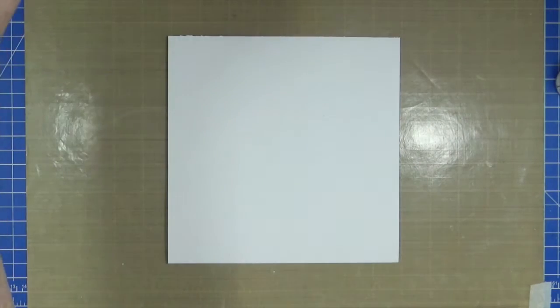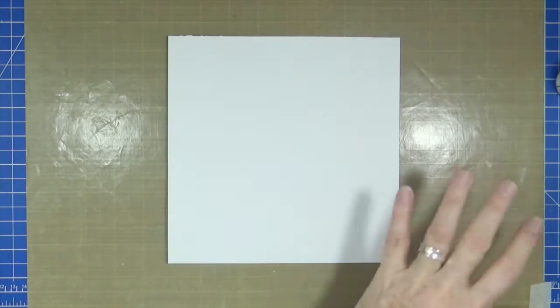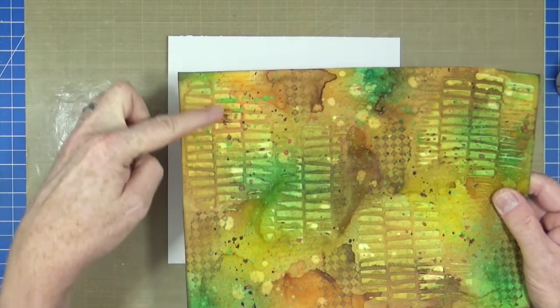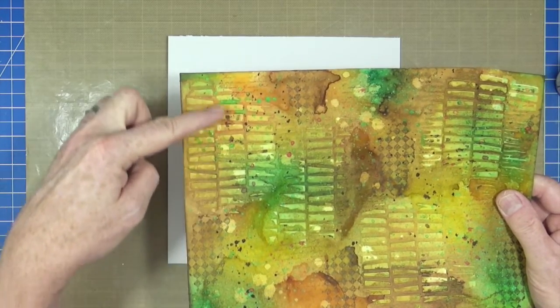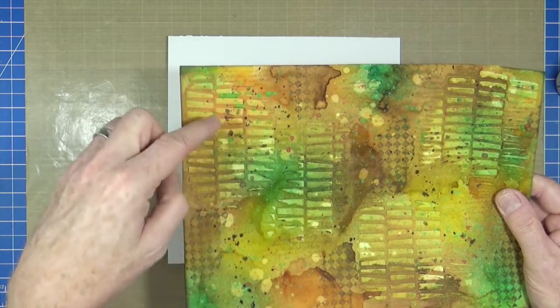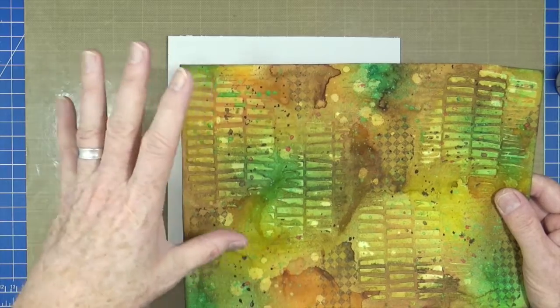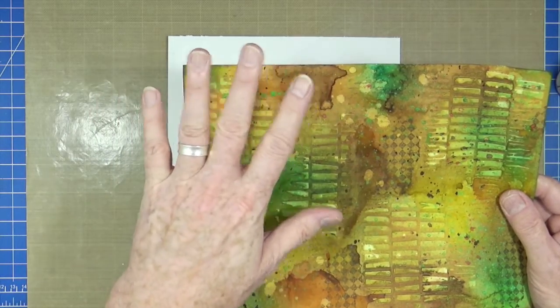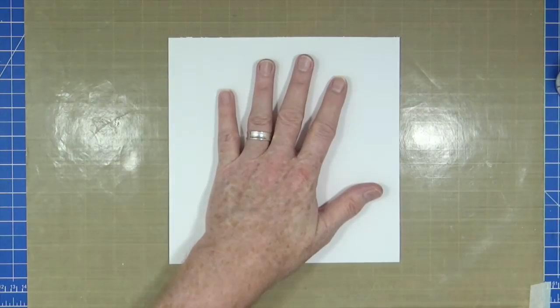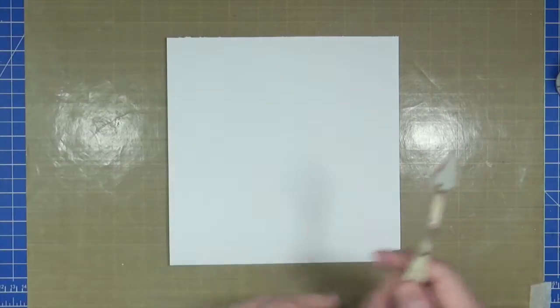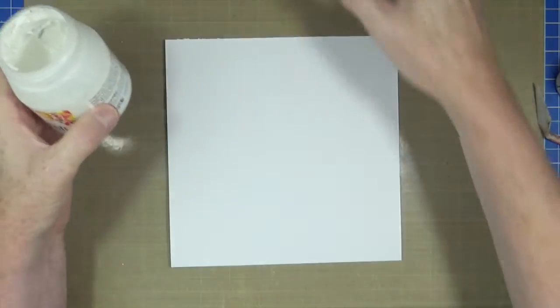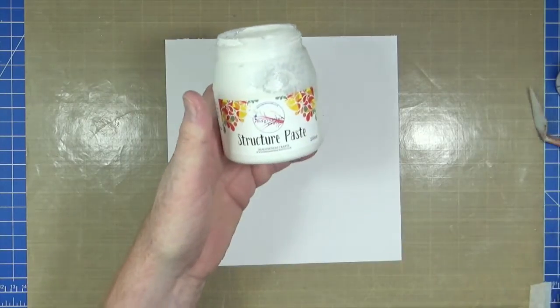So the first thing that I want to do is I want to introduce some texture onto the page. So I'll just bring that back in again, I shouldn't have put it away. So as you can see in this one, I did put some texture paste through my bamboozle stencil. But you can use whatever stencil you want if you want to put texture down in a pattern. For this page that I'm going to be creating today, I'm not going to be using a stencil, I'm not going to be using a pattern.